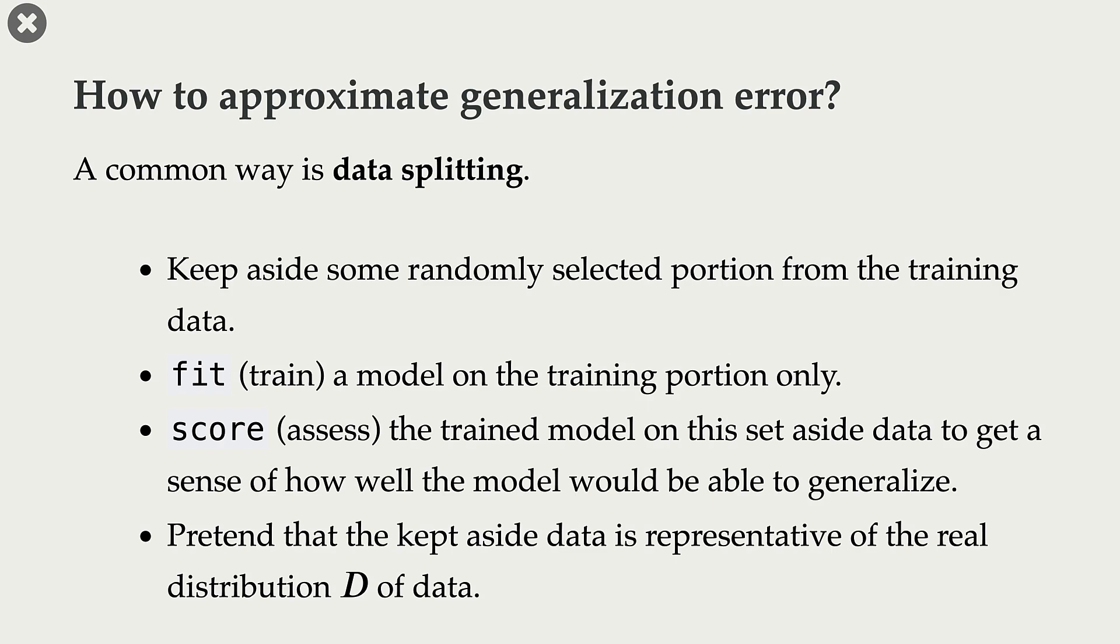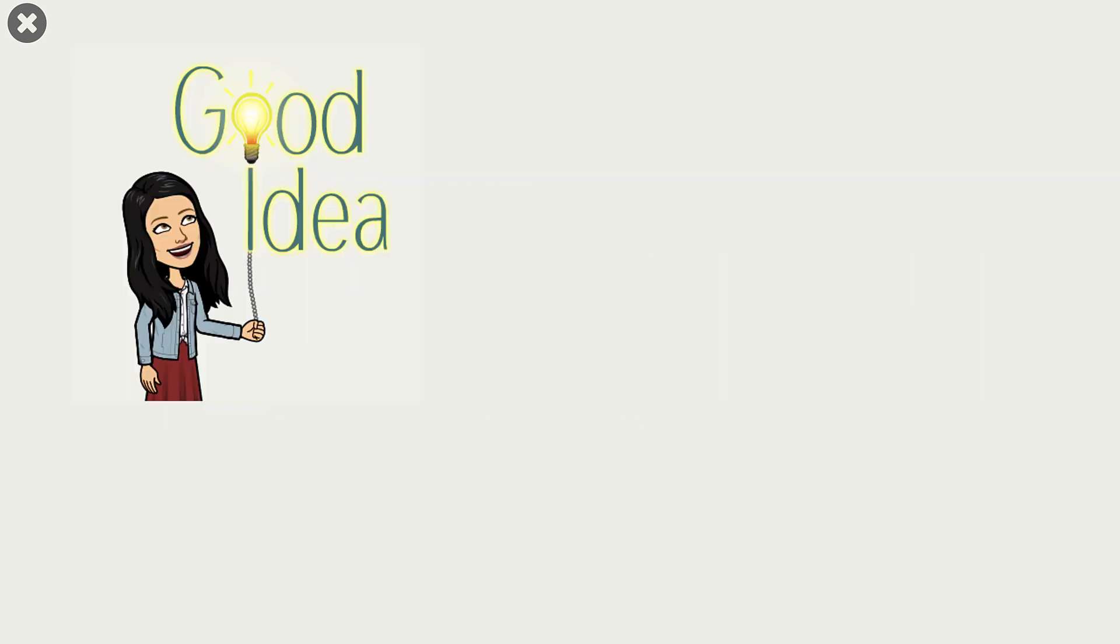If our model is performing well on the training data, that is if it is giving an error of zero on the training data, that's good. But we don't really feel very confident about our model because it might be possible that it's just modeling some quirks in the data. But if our model also performs well on this set-aside data, which it hasn't seen before during training, then we can feel more confident about our model. So it does sound like a reasonable thing to do.